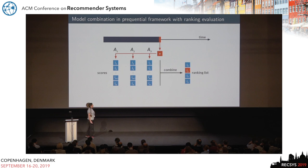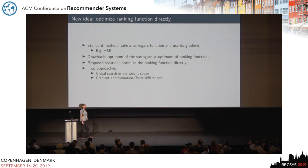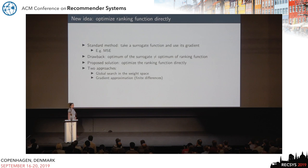The objective is choosing the optimal combination of weights. The standard method to optimize a ranking function — which has lots of flat parts and jumps — is taking a surrogate like mean square error and using its gradient. The drawback of that approach is that the optimum of the surrogate and the optimum of the ranking function might remarkably differ. So we propose the direct optimization of the ranking function.